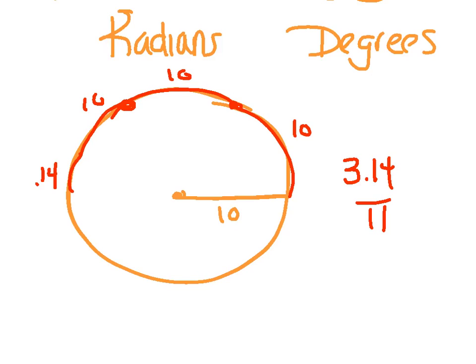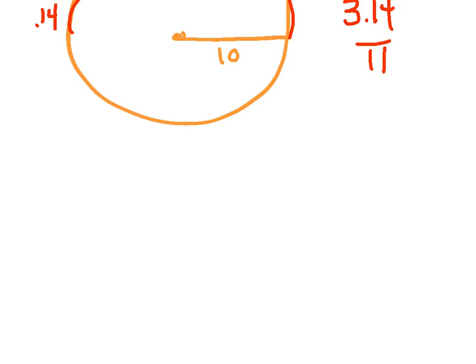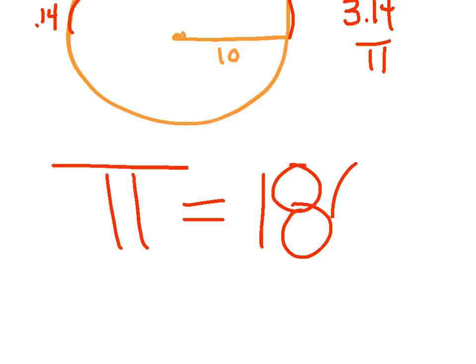So now that we know what a radian is, our goal is to be able to convert from a degree to a radian. And again, I just want to stress that pi is equivalent to 180.